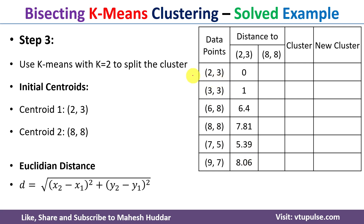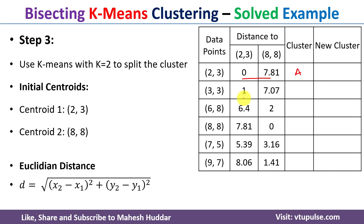Now we calculate the distances from the same data points to centroid two. The first distance is 7.81. Similarly we calculate all other distances. Once all distances are computed, we compare the distance to centroid one and centroid two for each data point and assign each point to the cluster with the minimum distance. Zero is the minimum for the first data point, so it is assigned to cluster A. One is the minimum for the second, so it goes to cluster A as well; the third point goes to cluster B, and so on.